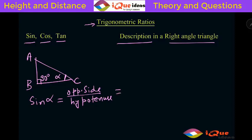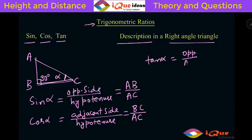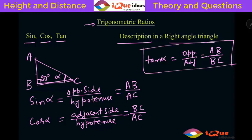For angle alpha: sine of alpha is the opposite side divided by hypotenuse — in this case AB divided by AC. Cos of alpha is the adjacent side divided by hypotenuse — the side beside the angle, which is BC, divided by AC. And the most important one: tan alpha is equal to opposite side divided by adjacent side — that is AB divided by BC.